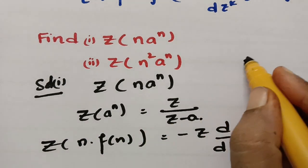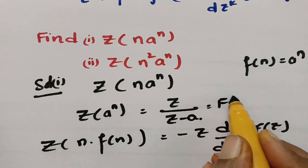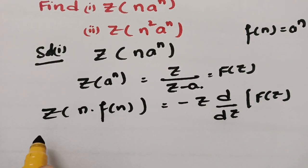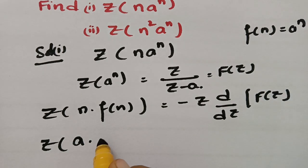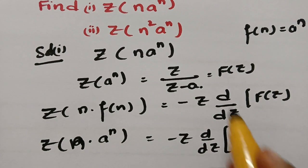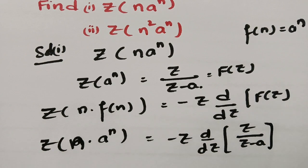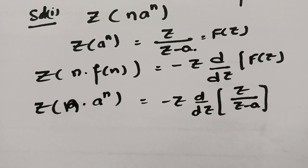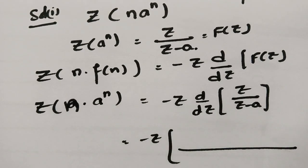So f(n) = aⁿ and capital F(z) = Z/(Z−a). Therefore Z{n·aⁿ} = minus z times d/dz of [Z/(Z−a)]. Now we have to make a derivative of Z/(Z−a), so this is the u/v rule, where u = Z and v = (Z−a).